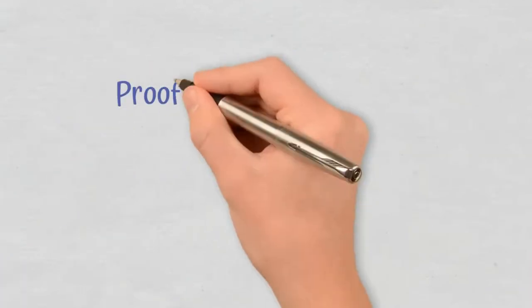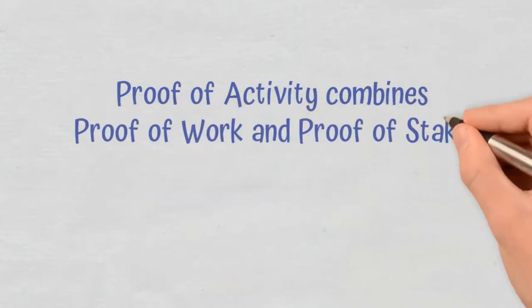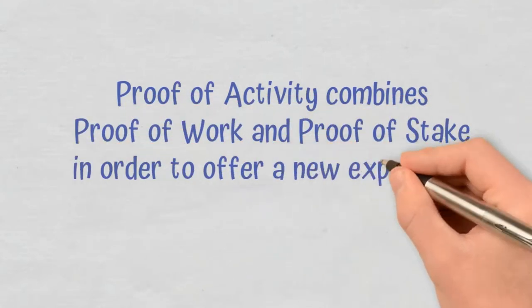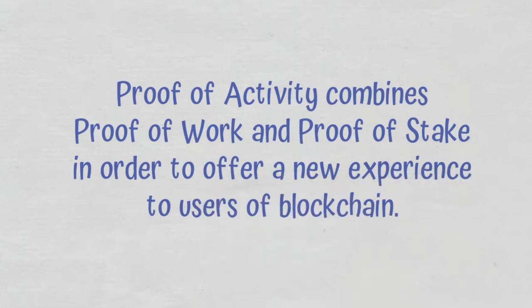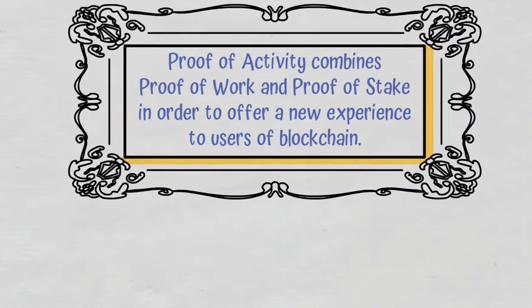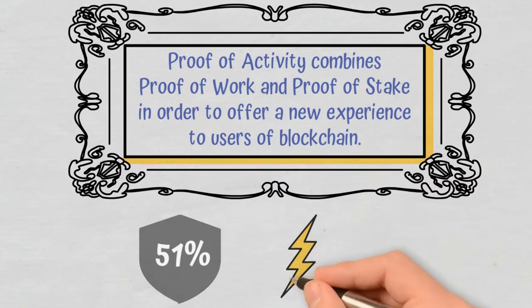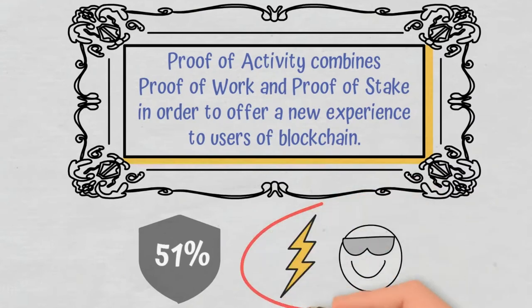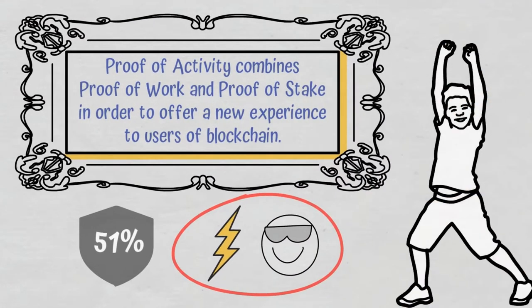Conclusions. Proof of Activity combines Proof of Work and Proof of Stake in order to offer a new experience to users of blockchain. The result of the combination translates into bigger 51% attack protection, but also has its downsides, such as high energy consumption and the nothing-at-stake issue. If these problems are solved, Proof of Activity could have a lot of potential for the future.